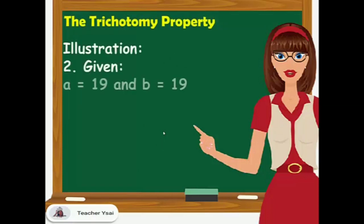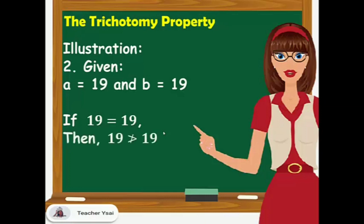Another example: A equals 19 and B equals 19. If 19 equals 19, then we can say that 19 is not greater than 19, or 19 is not lesser than 19.